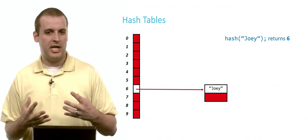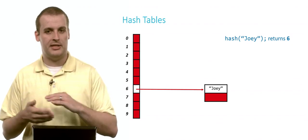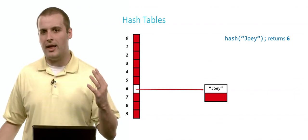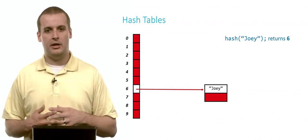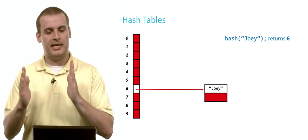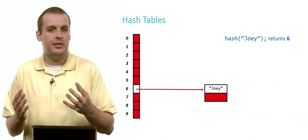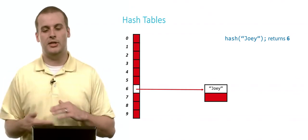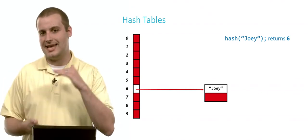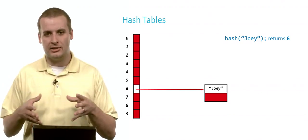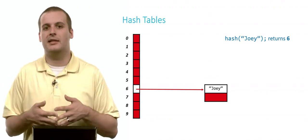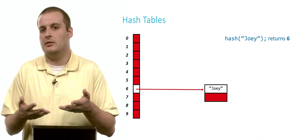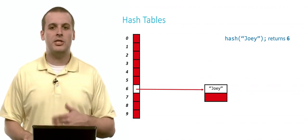So if we need to look up Joey later, we just hash Joey again. We get 6 again because our hash function is deterministic. And then we start at the head of the linked list pointed to by array location 6. And we can iterate across that trying to find Joey. And if we build our hash table effectively and our hash function effectively to distribute data well, on average each of those linked lists at every array location will be one-tenth the size.